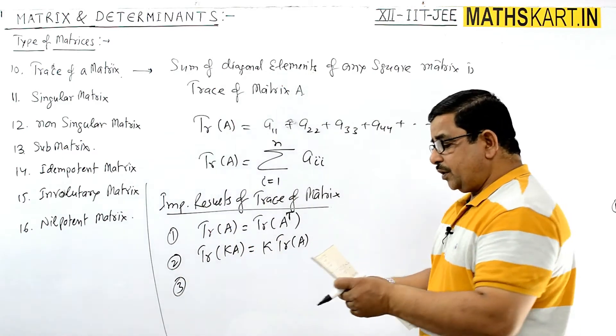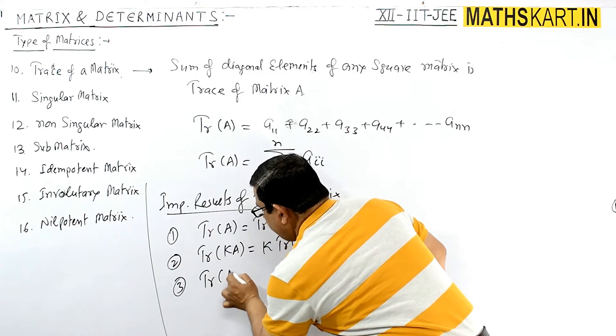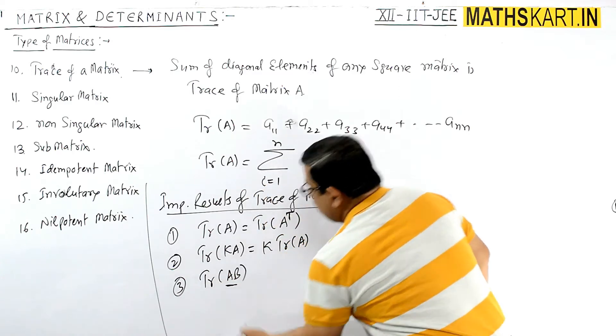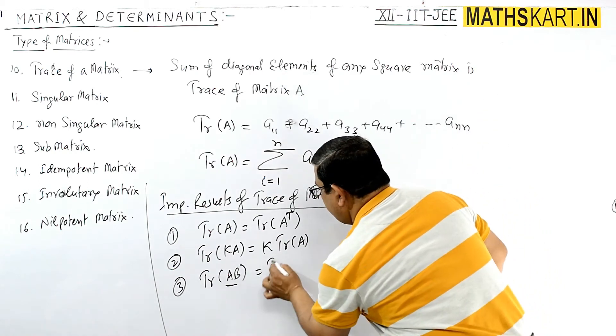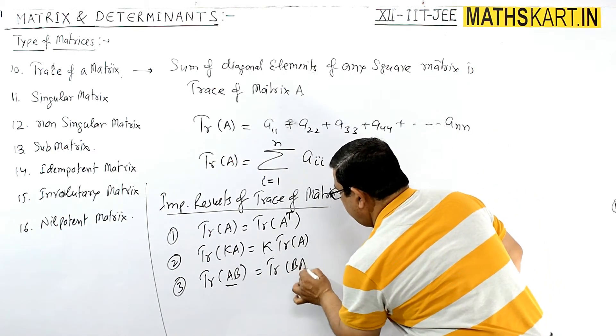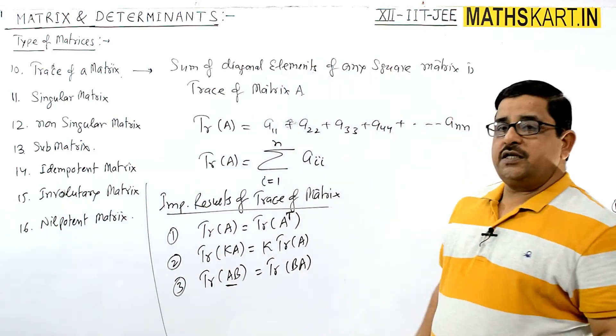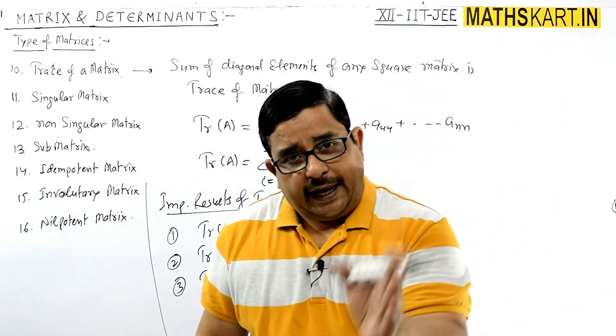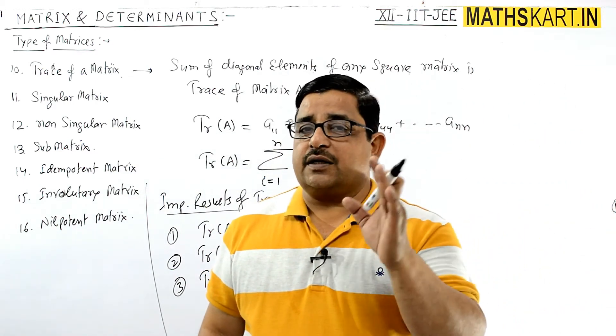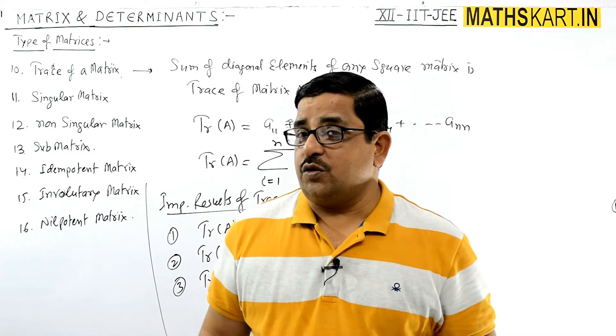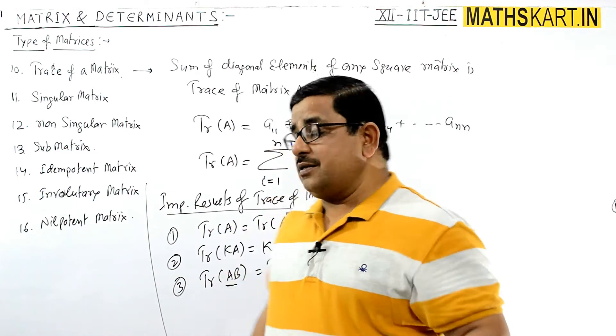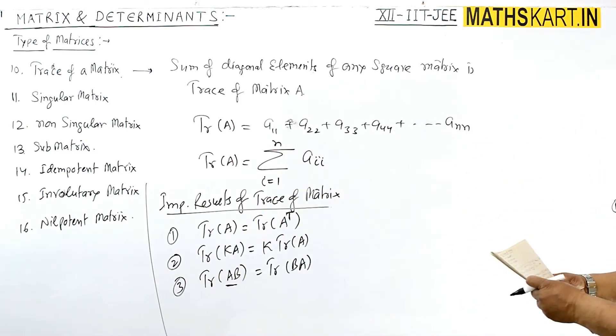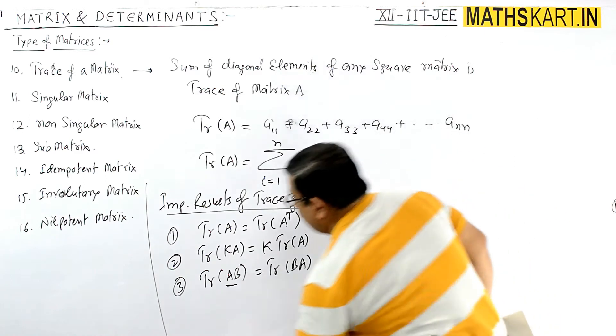Third property: trace of AB. AB means it is a product of two matrices, so that equals trace of BA. Trace of AB is equals to trace of BA. Diagonal elements have no difference if both matrices are square matrices.